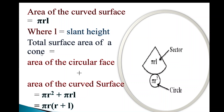The total surface area of a cone is the area of the sector plus the area of the circle — that is, πr² plus πrl. By factoring out πr, you get πr(r + l). So the curved surface area is πrl, while the total surface area is πr² + πrl.